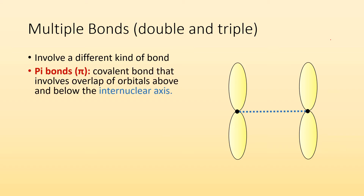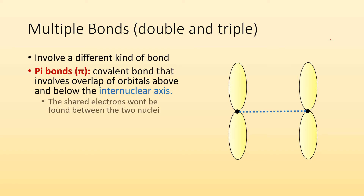Pi bonds are covalent bonds that involve overlap of orbitals above and below the internuclear axis. You can see here I drew a dotted line connecting the two nuclei — that's our internuclear axis. The bonding isn't going to occur along those lines; the shared electrons are not going to be found directly in between the two nuclei.